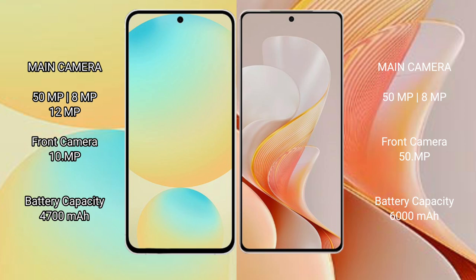Samsung Galaxy S24 FE has a 4700mAh battery with 25W fast charging support. Vivo S19 has a larger 6000mAh battery with 80W fast charging support.